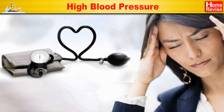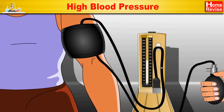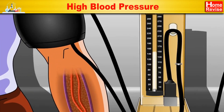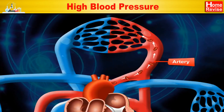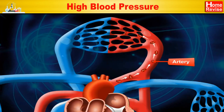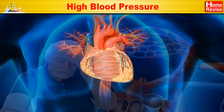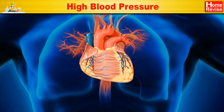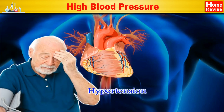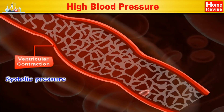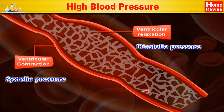High blood pressure greater than the normal range is referred to as hypertension. In the arteries of a person with hypertension, unnecessary tension develops and the heart needs to perform more work than under normal conditions. In hypertension, both systolic and diastolic pressures are high.